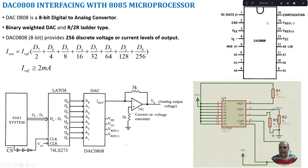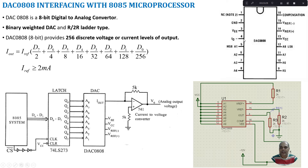Now let us see the pin details of the DAC 0808. It is a 16-pin IC. Pin numbers 12, 11, 10, 9, 8, 7, 6, and 5 represent the 8-bit data: pin 12 gives the LSB data and pin 5 is given the MSB data. Pin number 4 produces the output current, which can be connected to a voltage by using a resistor or a current-to-voltage converter circuit.